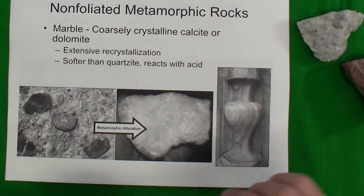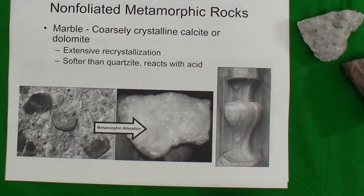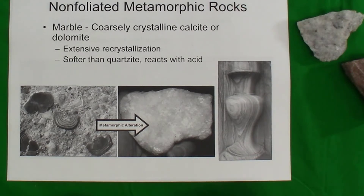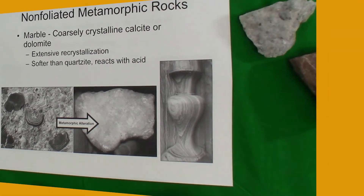In summary, when identifying metamorphic rocks, the first question to ask is whether the rock is foliated. If so, describe the foliation and look at the minerals present to determine the name of the rock. If the rock is not foliated, you would likely need to do mineral property tests or look for other characteristics to define the non-foliated metamorphic rock.